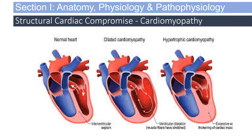Cardiomyopathy is a form of structural cardiac compromise that affects cardiac output significantly. In dilated cardiomyopathy, you have a dilated left ventricle and a very narrow, weak left ventricular wall. In hypertrophic cardiomyopathy, you end up with a smaller left ventricle and a larger, inefficient, stiff, thick ventricular wall.